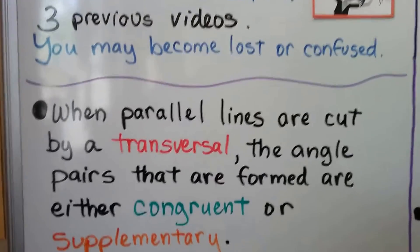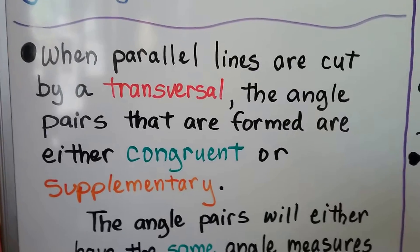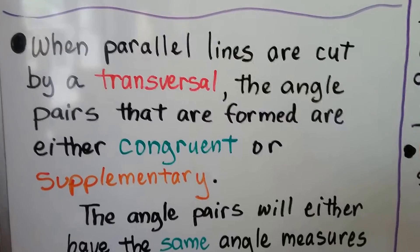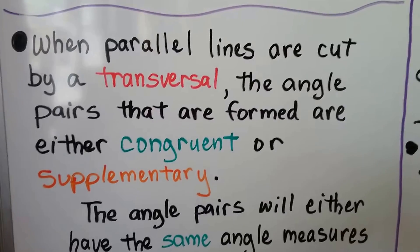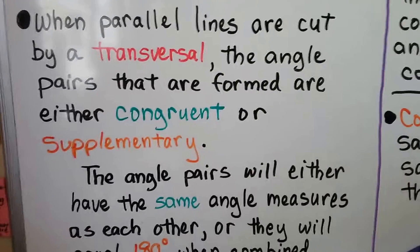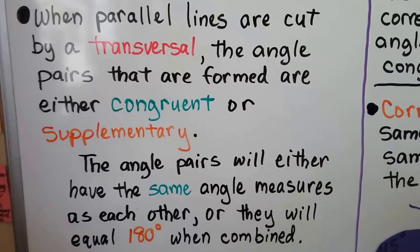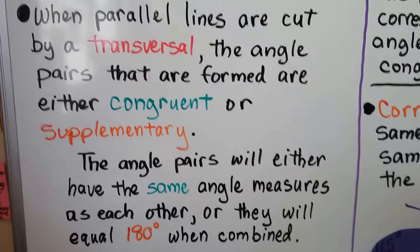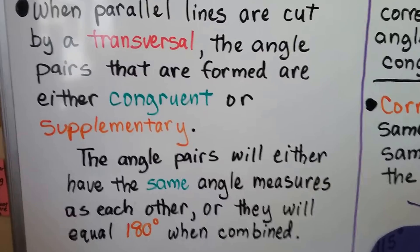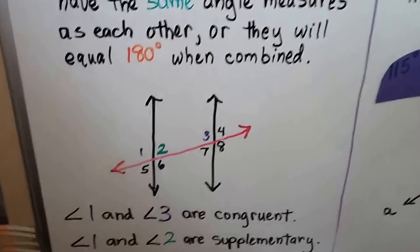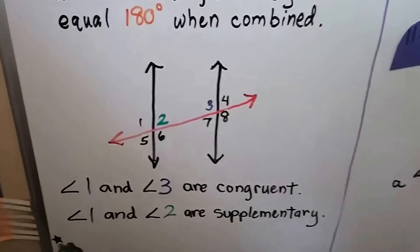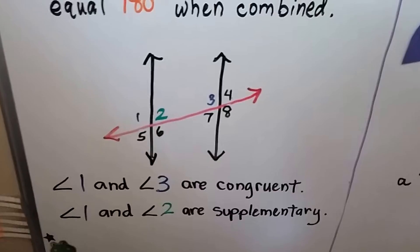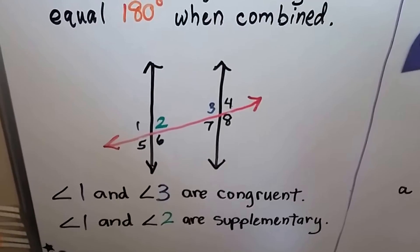When parallel lines are cut by a transversal, the angle pairs that are formed are either congruent or supplementary. That means the angle pairs will either have the same angle measures as each other, or they'll equal 180 degrees when combined. For example, angle 1 and angle 3 are congruent, while angle 1 and angle 2 are supplementary.